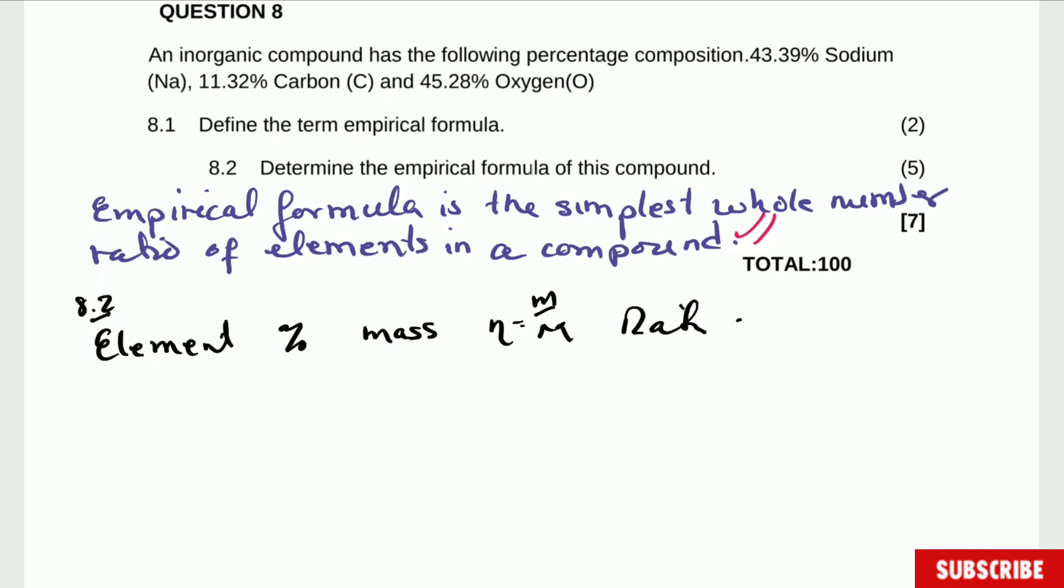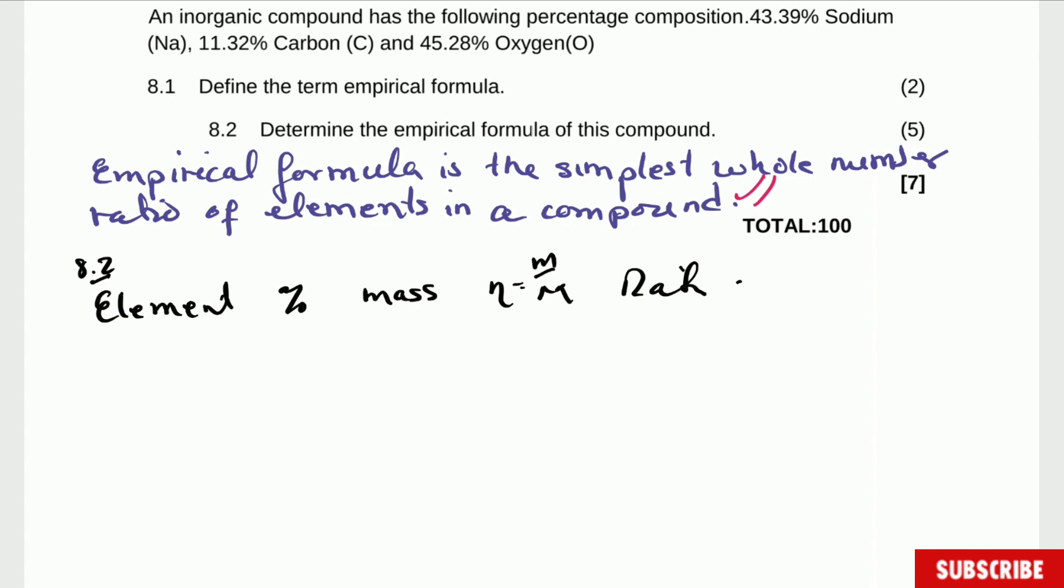Maybe I took too small spaces here but we're going to fix it as we move. Okay so the elements are sodium so I'm going to write Na, there is carbon C and there is oxygen I'm going to write O. Percentages are 43.39 for sodium, for carbon is 11.32 and for oxygen is 45.28. That is the percentage and those are the elements.